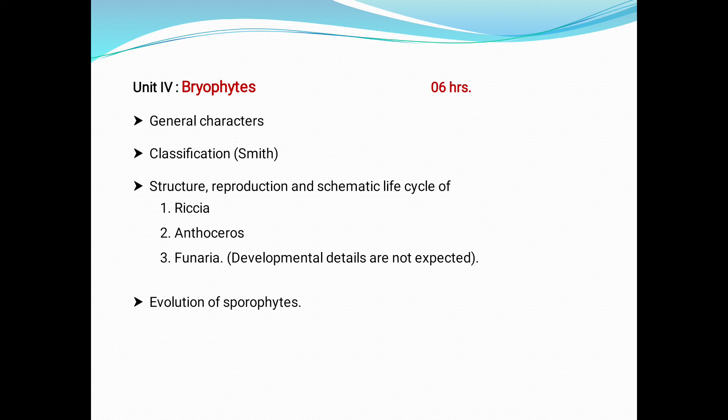Bryophytes are an informal group consisting of three divisions of non-vascular land plants: the liverworts, hornworts and mosses. They are limited in size and prefer moist habitats, although they can survive in drier environments. Hence, they are called the amphibians of the plant kingdom — 'amphi' refers to two — they can live in water as well as in drier areas.